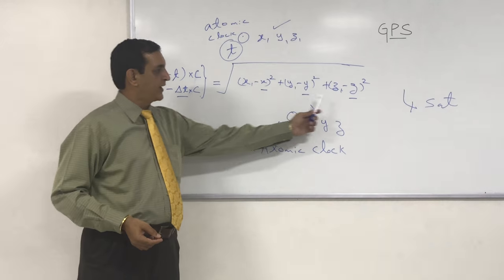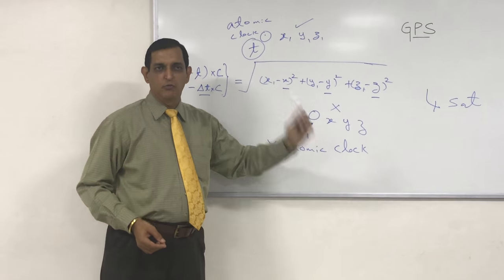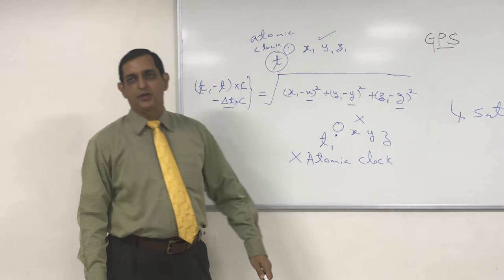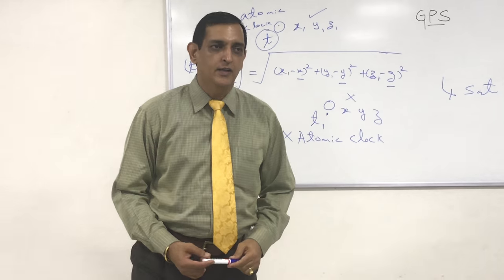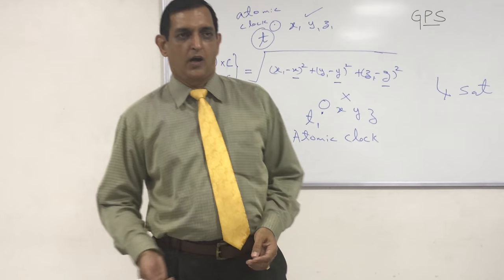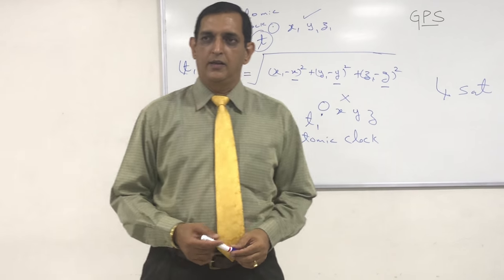The four unknowns are delta T, X, Y, and Z. And X, Y, Z will give my position in terms of latitude, longitude, and altitude.